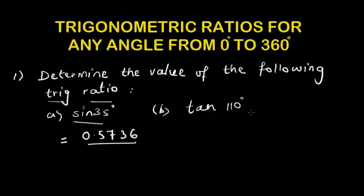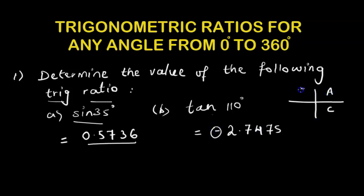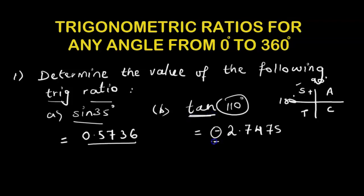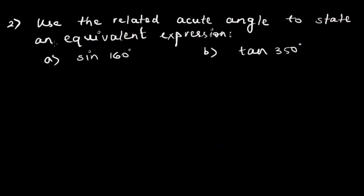If we want to find tan 110, we put it in the calculator and see that the value is negative 2.7475. The reason we get a negative value is because of the CAST rule. 110 degrees lies in the second quadrant, which is the house of sine, so sine is positive there. Since we are looking for a tan ratio, the answer is negative.